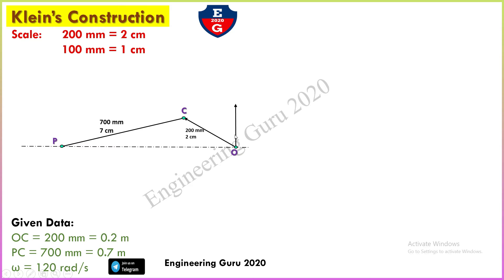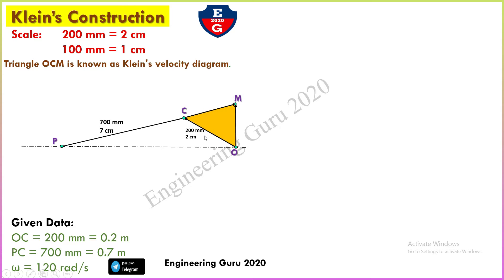Now draw a perpendicular line to OP, and extend the PC line (the connecting rod line) so that it intersects this perpendicular line. This intersection point is called point M. The triangle OCM is known as Klein's velocity diagram. In this triangle, the side representing velocity of P with respect to O is VPO (also written as VP since point O is fixed), and CM represents the velocity of P with respect to C, which is VPC.